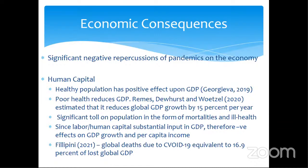Levy and Filippini conclude that developing nations would suffer the most lasting damage. Jorda, Singh, and Taylor gauge the effect on real returns on assets and conclude they tend to remain depressed for long whenever pandemics strike. On human capital, research shows that a healthy population has positive effects on GDP. Poor health causes a decline in GDP growth by 1.5% per year. Since labor and human capital are substantial inputs to GDP, we can expect negative effects.